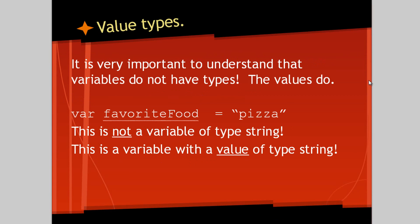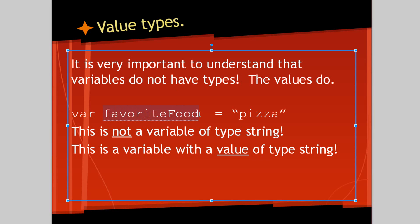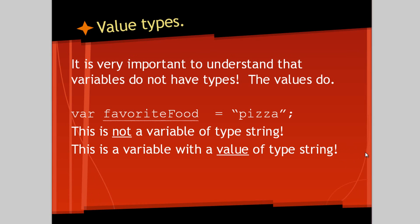It's very important to understand that variables do not have types — the values do. There are different data types in JavaScript, such as string, number, boolean, or anything like that. The variables do not have types. So here we have an identifier of a variable, favorite food, and it has the value pizza. This is not a variable of type string — it's just a variable. This is a variable with a value of type string. The variables do not have types; the values have types. This goes along with knowing that JavaScript is a loosely typed language.